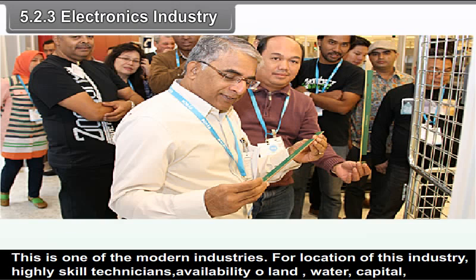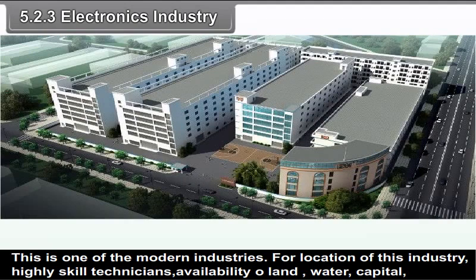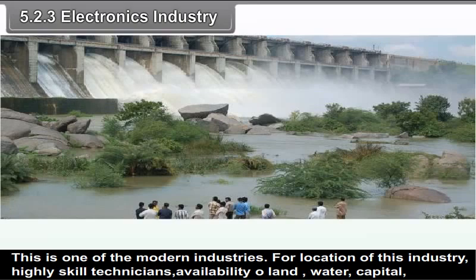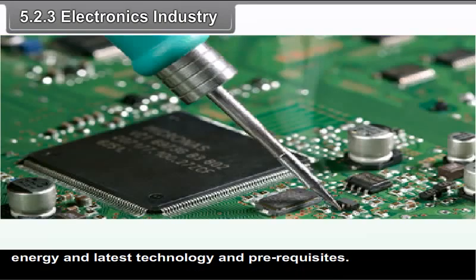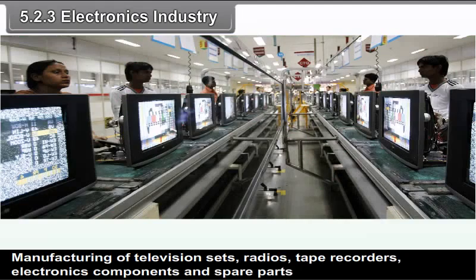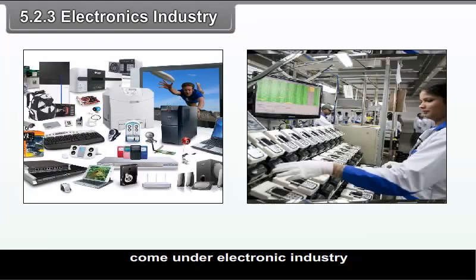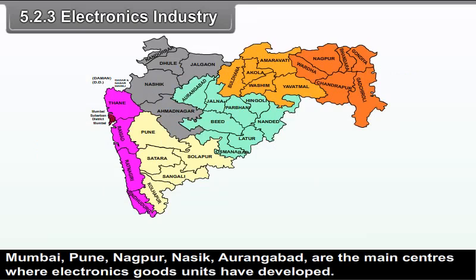Electronics industry is one of the modern industries. For location of this industry, highly skilled technicians, availability of land, water, capital, energy and latest technology are the prerequisites. Manufacturing of television sets, radios, tape recorders, electronic components and spare parts come under electronic industry. Mumbai, Pune-Chinchwad, Nagpur, Nasik and Aurangabad are the main centers where electronics goods units have developed.